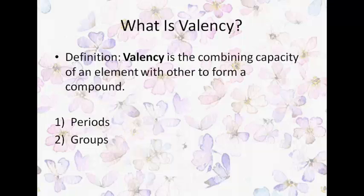So valency is the combining capacity of an element with others to form a compound. For metals, valency equals the number of electrons in the outermost shell. For non-metals, valency equals eight minus the number of electrons in the outermost shell. Transition metals can show more than one valency in compound formation.